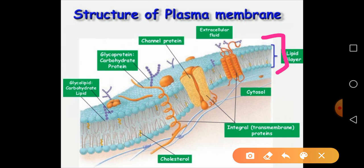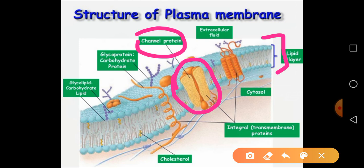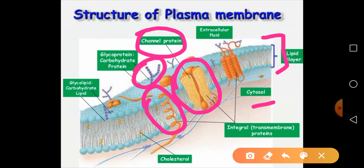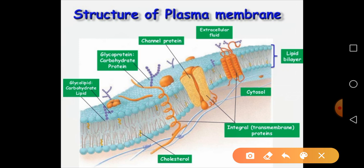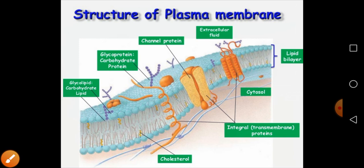This lipid bilayer is very important. There are some proteins embedded into the membrane — these proteins act as channels for transport purposes. There are also integral proteins completely buried in the lipid bilayer. Here are some carbohydrates attached to both the lipid and the protein. In the diagram you can see the three biomolecules and how they are arranged in the plasma membrane.